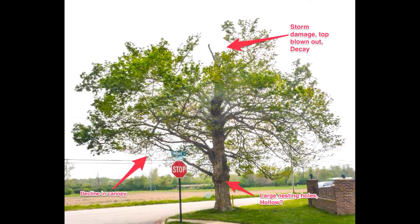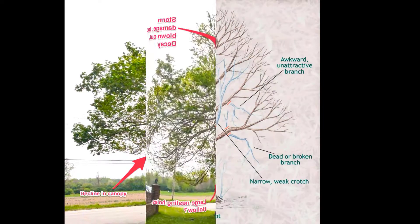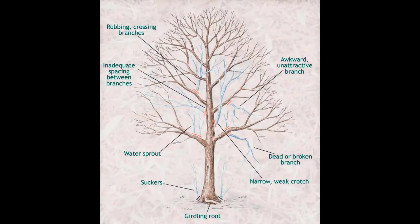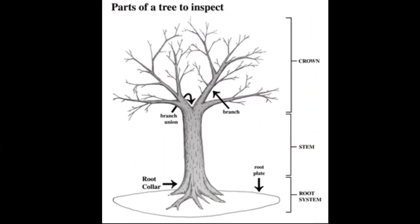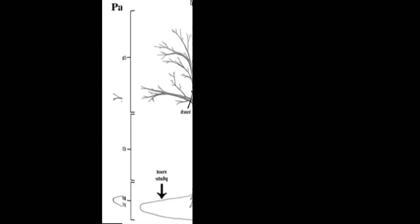Individual tree characteristics should be considered when conducting evaluations for defects and potential failure. Examine each section of the tree using a systematic approach with standardized evaluation methods. Review the canopy, branches, and root zone to check for sites of failure.